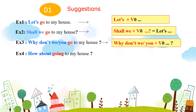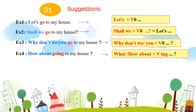Ví dụ thứ 4: "How about going to my house?" – Đến nhà tôi nhé. Dùng cấu trúc câu hỏi với What about hoặc How about cộng với động từ thêm -ing.